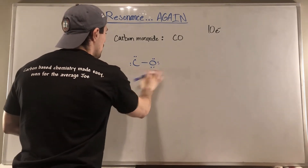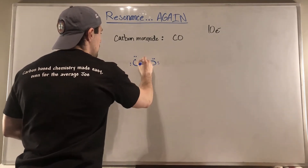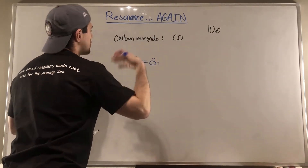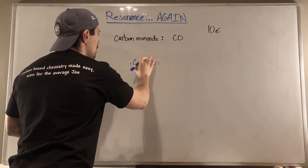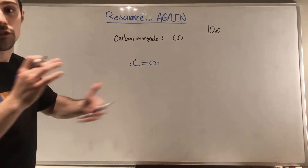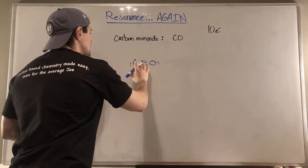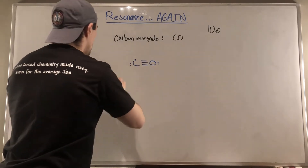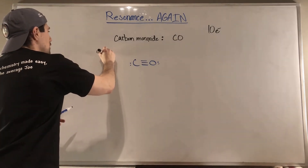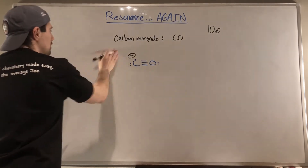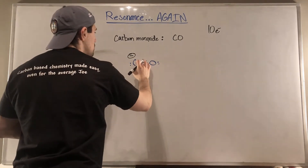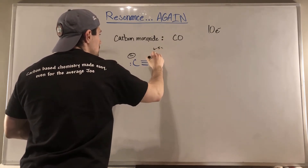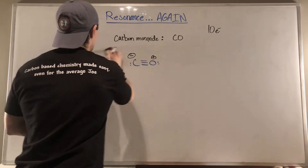With the triple bond structure, we count ten electrons — we're within our quota. For formal charges: carbon is controlling five electrons; carbon comes in with four, so carbon has a negative charge. Oxygen is controlling five electrons; oxygen comes in with six, so six minus five gives us a plus one on oxygen. This is our Lewis dot structure.